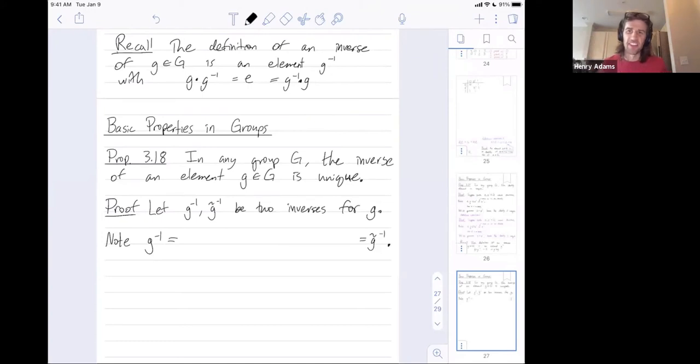Our hope is to prove that g inverse equals a bunch of stuff that we massage until we get g tilde inverse. So we're trying to prove that those two inverses are equal. So then we can conclude, since g inverse is equal to g tilde inverse, this means inverses are unique. A priori, we could have had a hundred different inverses for g. But any two of them we've now shown are equal to each other. Therefore, the inverse must be unique. There can only be one.